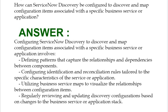Configuring ServiceNow Discovery to discover and map configuration items associated with a specific business service or application involves: first, defining patterns that capture the relationships and dependencies between components; second, configuring identification and reconciliation rules tailored to the specific characteristics of the service or application; and third, utilizing business service maps to visualize the relationships between configuration items.